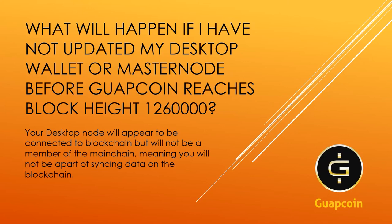This actually happened to me before on the first version of the wallet. Masternode rewards were coming in every hour or two, and then suddenly every minute or two. At first I thought it was great, but then I reached out to Tavana and she confirmed my wallet had forked — I was on my own blockchain. We had to re-sync with the rest of the blockchain to fix it.